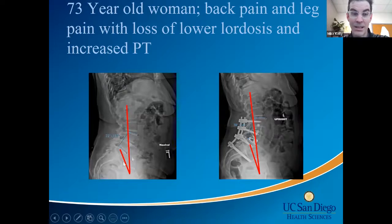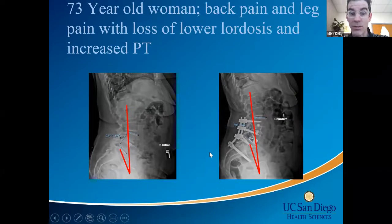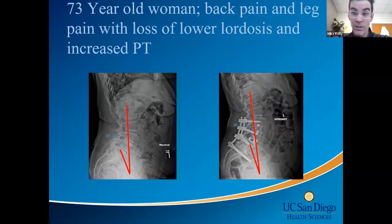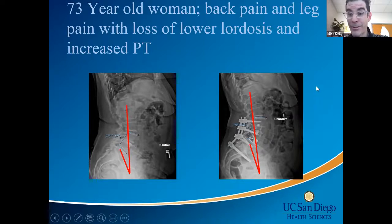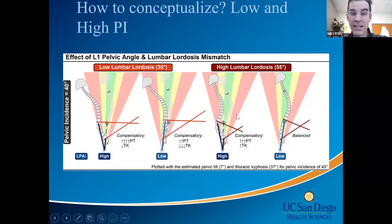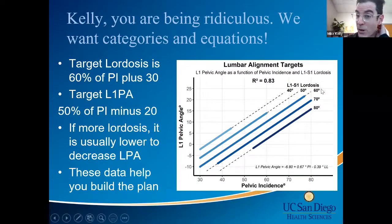Once you get above L4, you start seeing changes related to pelvic incidence and distribution of lordosis. Here's a case: a 73-year-old with degenerative stepwise spondies treated with a lateral ALIF and oblique approach plus percutaneous screws. We gave her 15–17 extra degrees of lordosis through those levels without significant blood loss. Historically people said 'you can't get a lot of lordosis, it's too much blood loss' — but with current implants and techniques you can give anyone 80 degrees of lordosis, possibly staged, without losing five liters of blood.